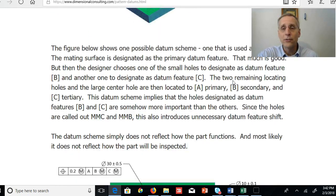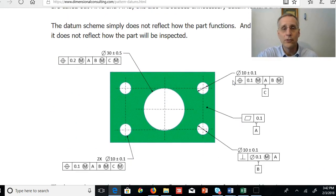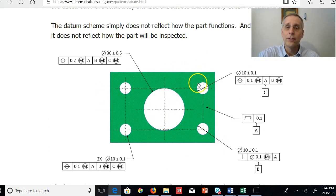So how would you dimension this part? All too often it's dimensioned like this. Of course, the flat surface is considered to be datum feature A, and that's appropriate.